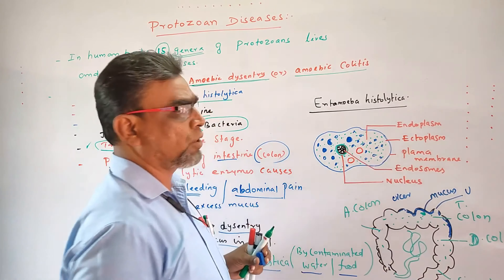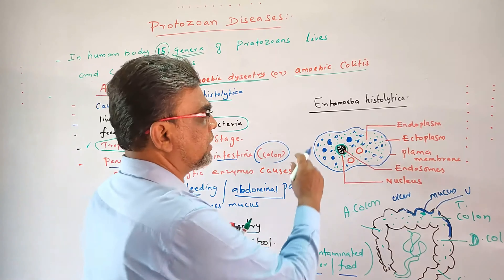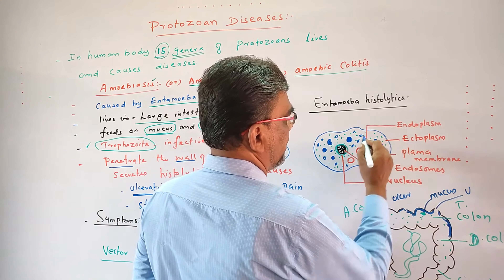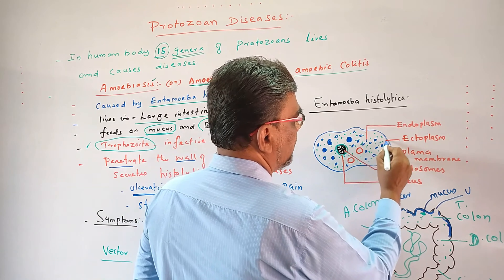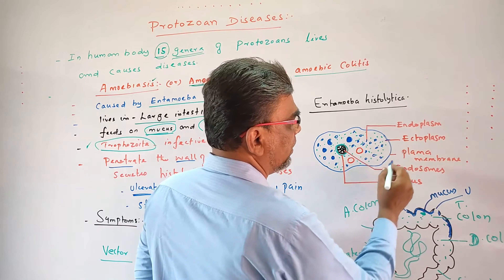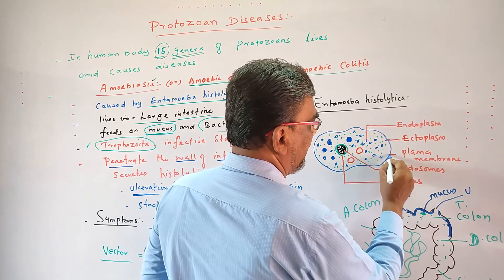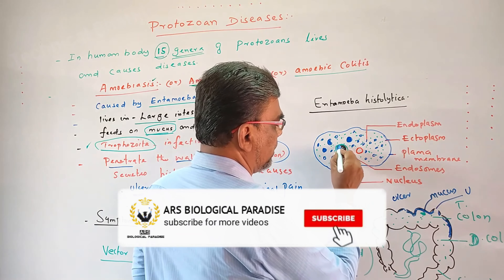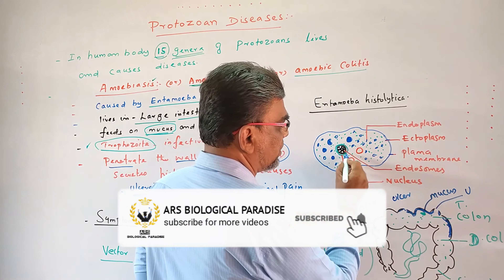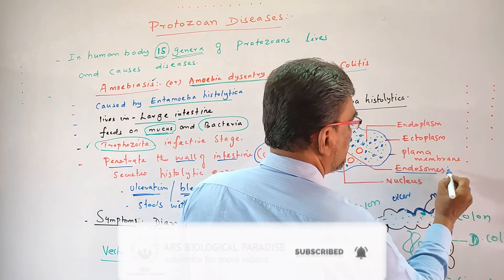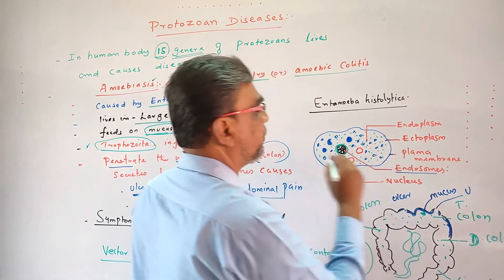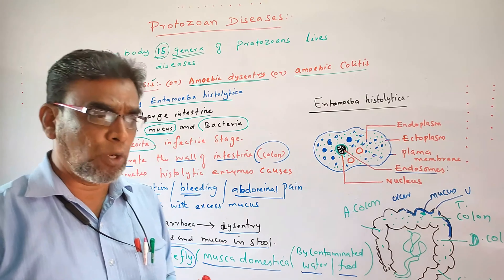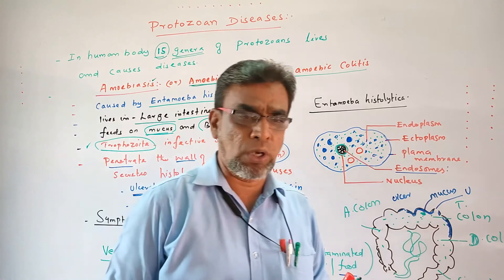We will now see the diagrammatic structure of Entamoeba histolytica. The inside is the endoplasm and the outside is the ectoplasm. The outer covering is called the plasma membrane, and inside the nucleus there is a structure called the endosome. This is the diagrammatic structure of Entamoeba histolytica.